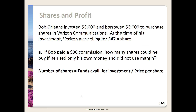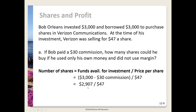Let's look at some more shares and profit calculations. Bob Orleans invested $3,000 and borrowed $3,000 to purchase shares in Verizon Communications. Verizon was selling for $47 a share. In part A, if Bob paid $30 in commission and did not use margin, he only uses his own $3,000. So funds available equal $3,000 minus the $30 commission, divided by $47 per share. That gives us $2,970 divided by $47, or 63.2 shares.